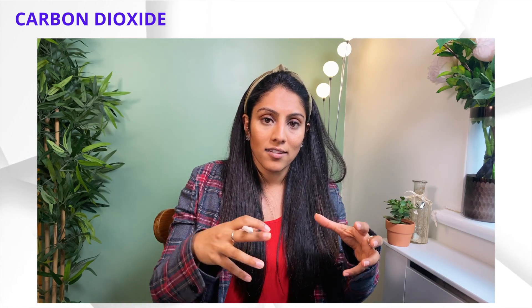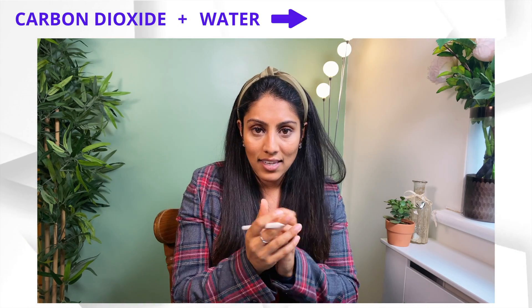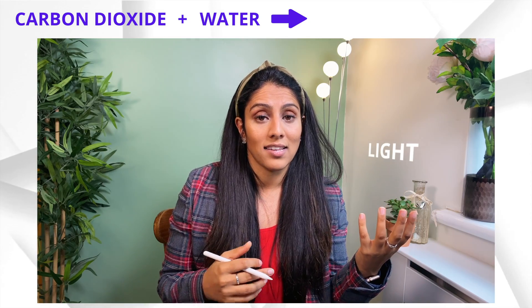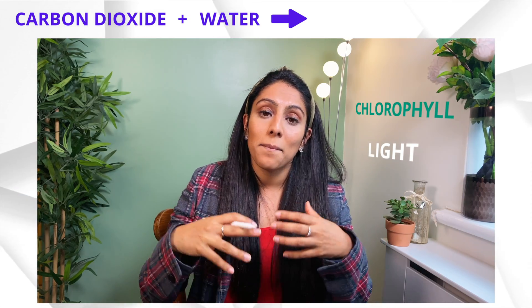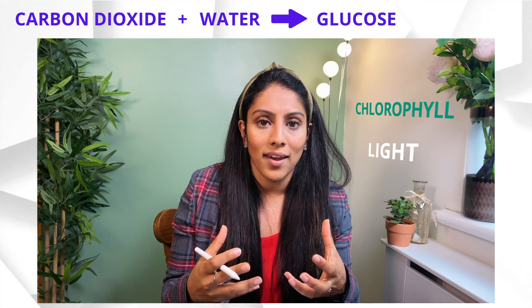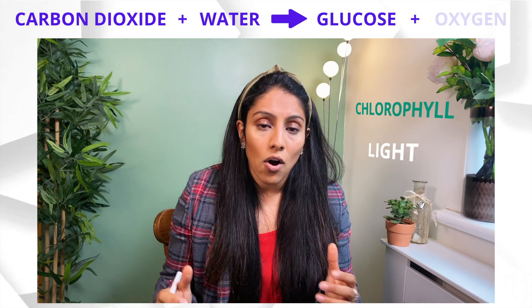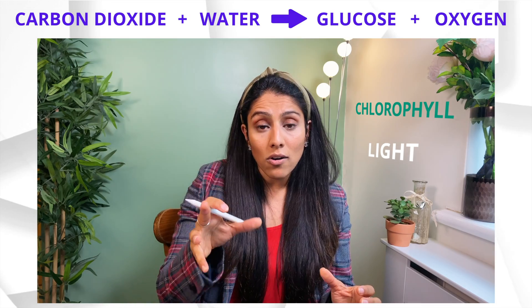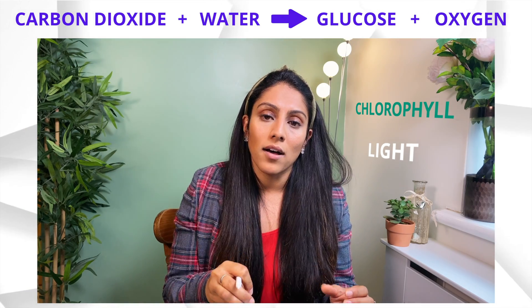So this is the reminder of the equation for photosynthesis: it's carbon dioxide and water, they react together with the presence of light and chlorophyll which is found in the leaves and they make glucose, that's the whole point. But they also make oxygen as a product and that oxygen is going to play a big part into the experiment that we're looking at today.